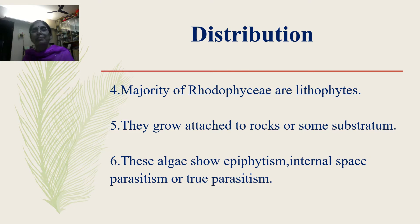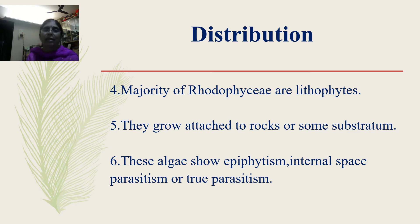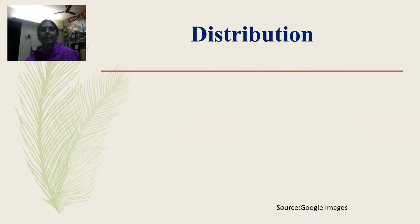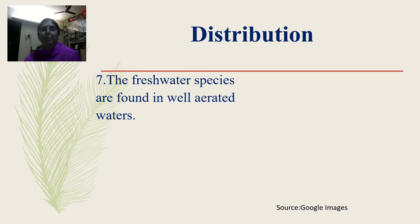These algae show epiphytism, internal space parasitism, or true parasitism. Epiphytism means they grow over the surface of another plant or thallus — but note, these red algae grow on the surface of other red algae. In internal space parasitism, they grow inside the thallus of another red alga. In true parasitism, they live at the expense of other algae.